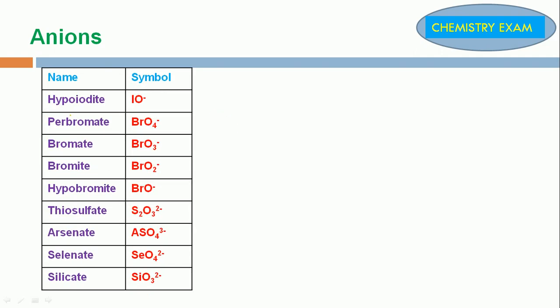Hypoiodate IO-. Perbromate BrO4-, Bromate BrO3-, Bromite BrO2-, Hypobromite BrO-.